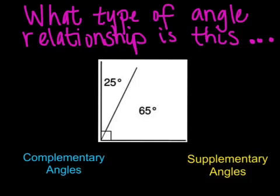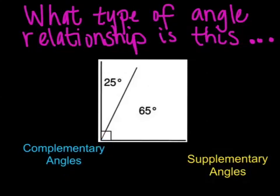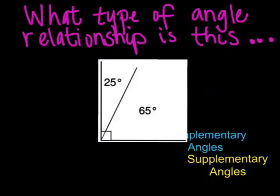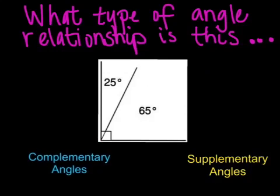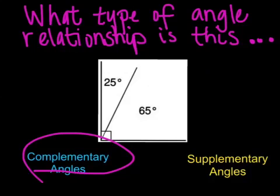We have a new pairing. What type of relationship is this? If you look at these two, you can either look at what special shape is being made because they're together. It's got that right angle box. It makes a corner, which also is the beginning letter of complementary. Or you can add the two measurements together 25 plus 65 and you should find they equal 90. So those two would be complementary.